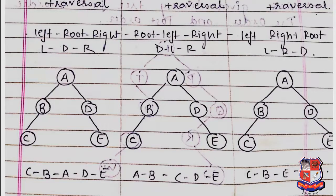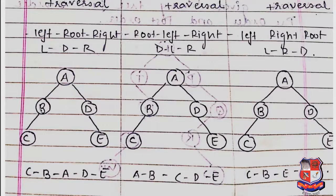For in-order traversal, we follow the rule: left, root, right. Starting from root A, we go to the left child B, then to the left child of B which is C. Since C has no left child, we visit C first, then move up to the root of that subtree which is B.